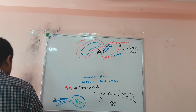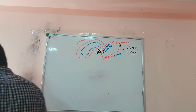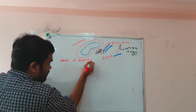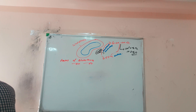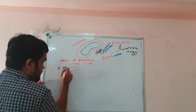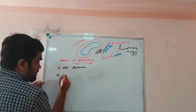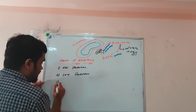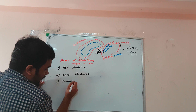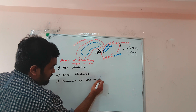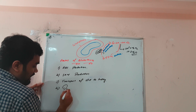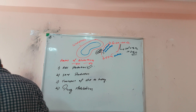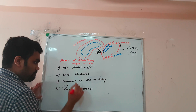Summarizing the functions of glutathione: the first is RBC protection from free radicals. Another function relates to S-adenosylmethionine — glutathione is involved as a methyl donor context. It also participates in transport of amino acids, and it plays a role in drug metabolism in the liver. These are the main important functions of glutathione.